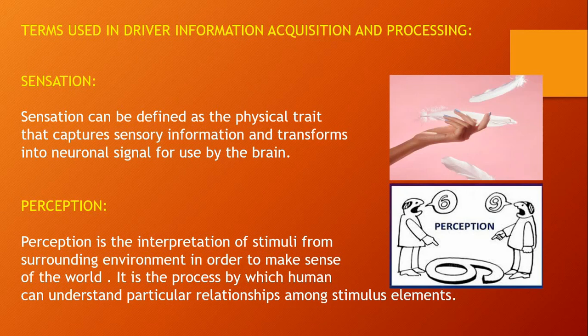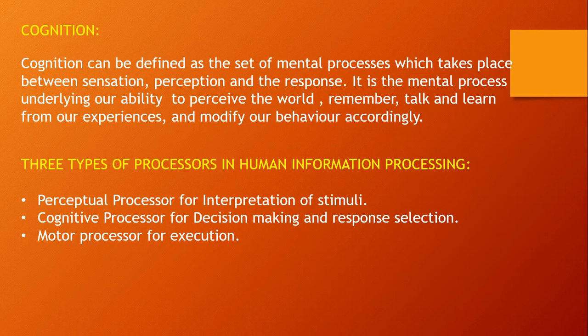Perception is the process by which humans can understand particular relationships among various stimulus elements. From the two images shown, you can understand what sensation and perception are. Cognition can be defined as the set of mental processes that take place between sensation, perception, and response — that is, the mental process underlying the ability to perceive the world, remember, and learn from our experiences.